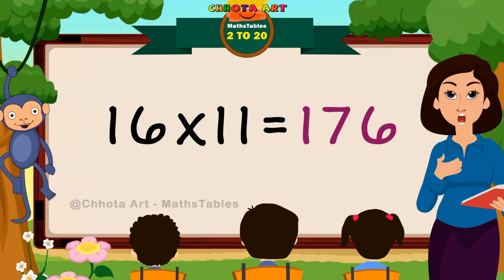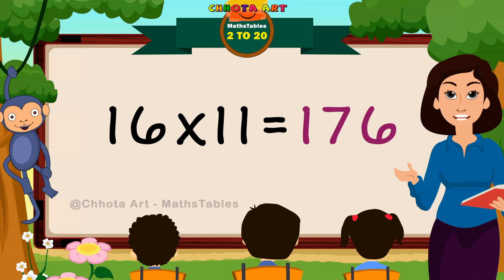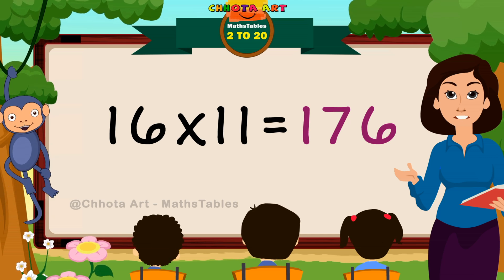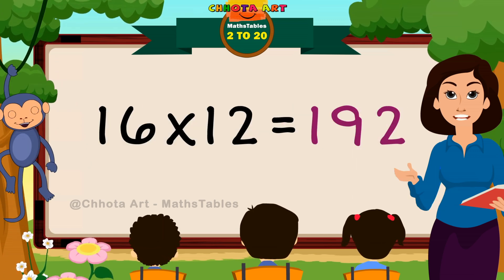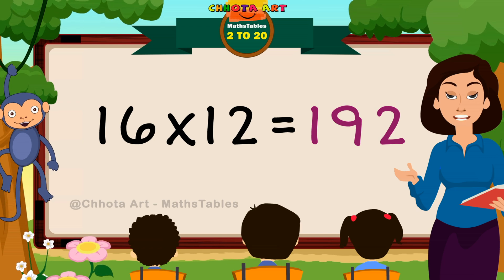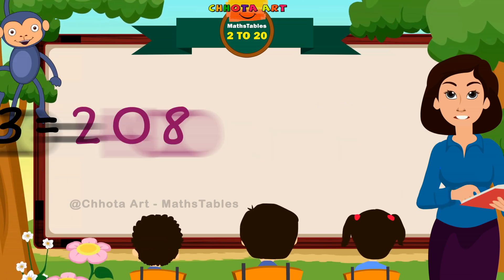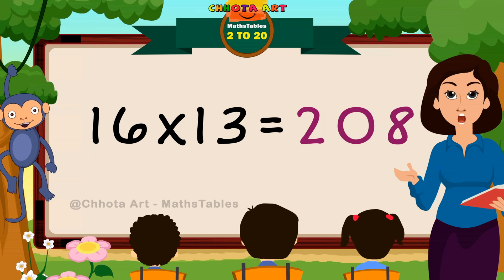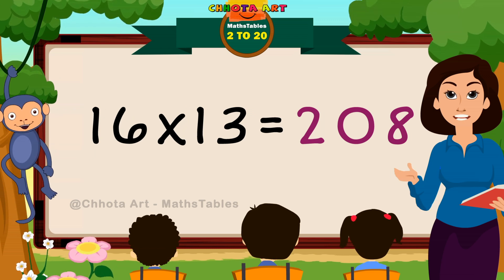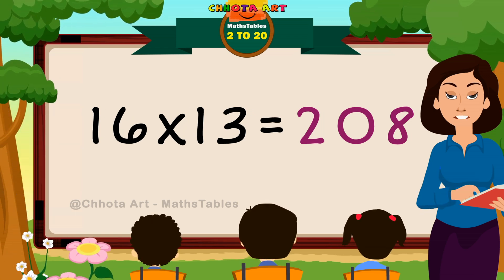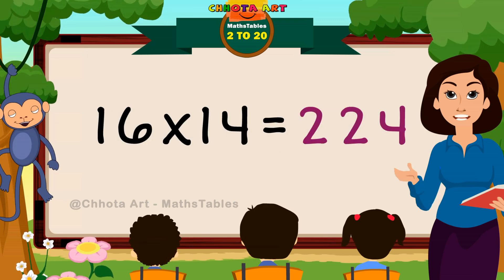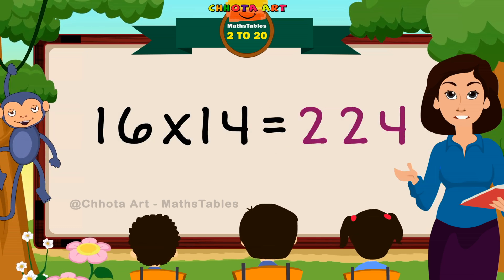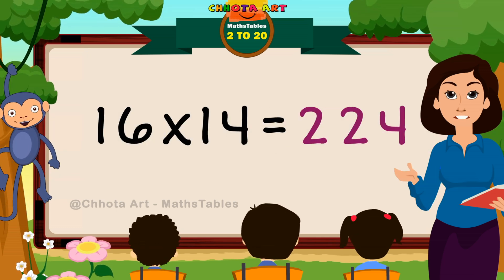16 elevens are 176. 16 twelves are 192. 16 thirteens are 208. 16 fourteens are 224.